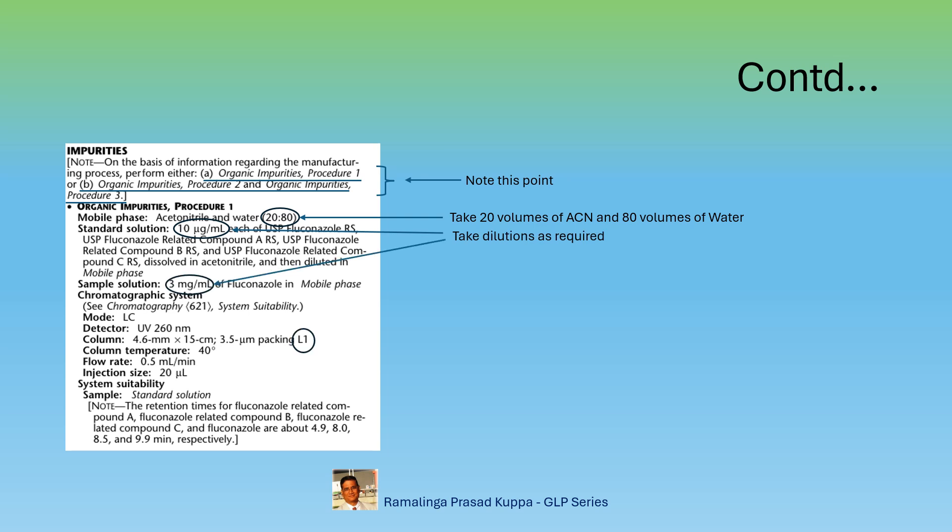Dilute the standard and sample in required volume in this ratio. There are about 75 stationary phases for HPLC from L1 to L75 and 48 phases for GC from G1 to G48. You may refer to this section in USP for more information.